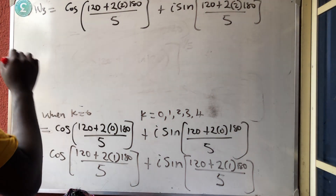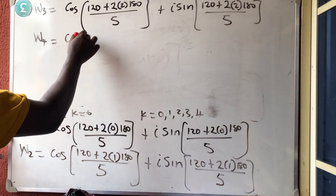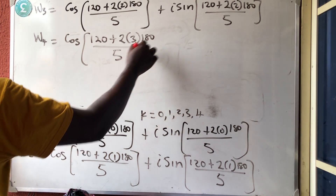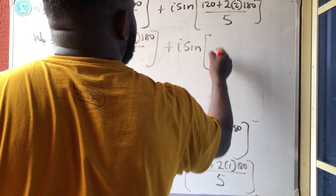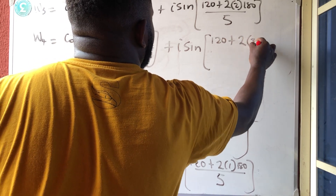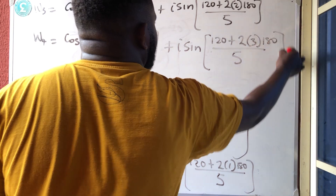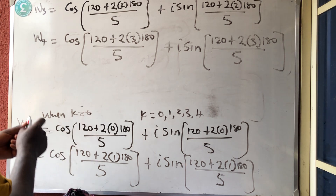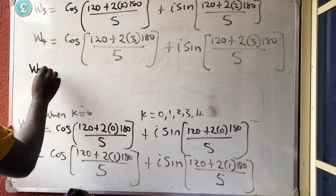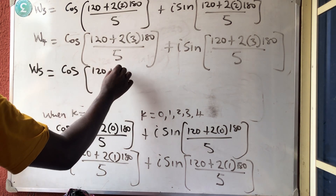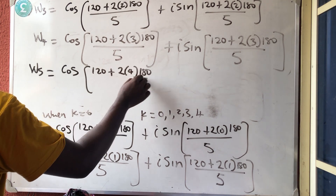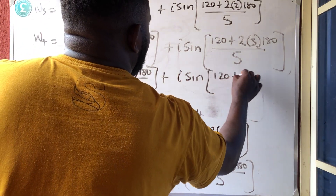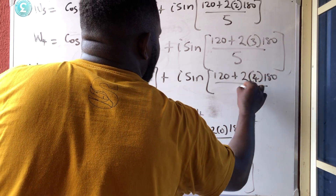The next one, W4: cos(120 + 2 × 3 × 180) over 5, plus i sine(120 + 2 × 3 × 180) over 5. The last but not the least, W5: cos(120 + 2 × 4 × 180) over 5, plus i sine(120 + 2 × 4 × 180) over 5.